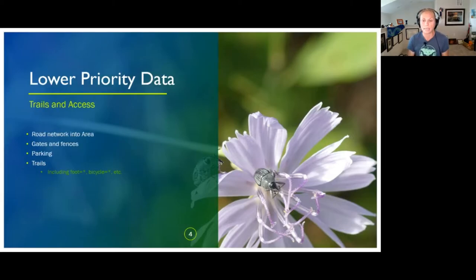Okay, so for me, lower priority data is, are you on the property? Are you allowed on the property? How do you get on the property? So for example, we'll talk a bit later about the Florida Trail. Is the Florida Trail on the property? Are there other trails on the property? Can you walk on them? Can you bicycle? Where do you park? Fences and gates and access.